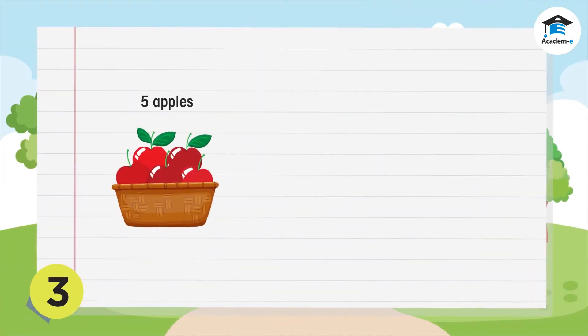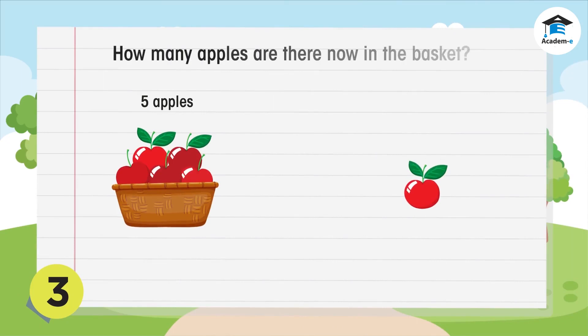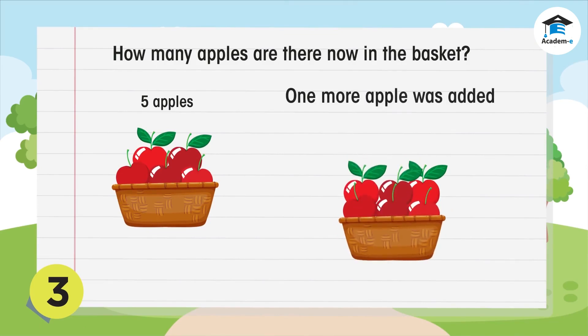There are five apples in the basket. Alex has one apple and he puts it into the basket. How many apples are there now? One more apple was added into the basket, so there are now six apples. Six is one more than five.